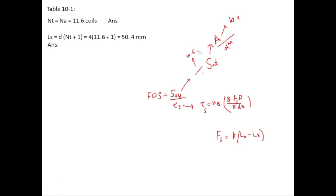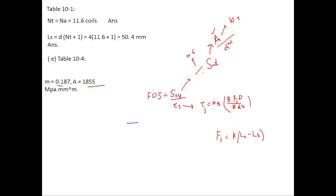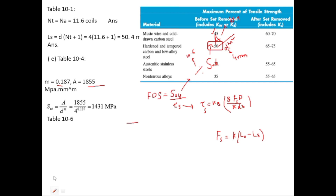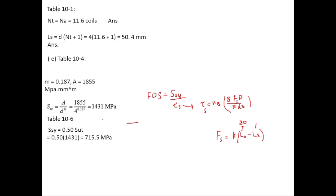Taking A and M values from table 10.4 and substituting d = 4 mm gives SUT = 1431 MPa. From table 10.6, for hard and tempered wire before set removal, SSY = 50% of SUT = 0.5 × 1431 = 715.5 MPa. The free length L_0 is given as 80 mm, L_S = 50.4 mm, so L_0 minus L_S = 29.6 mm. With k = 3.33 N/mm, F_S = 3.33 × 29.6 = 98.66 N.